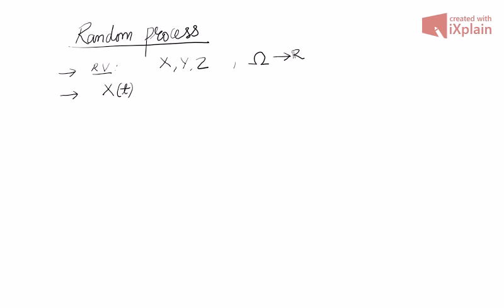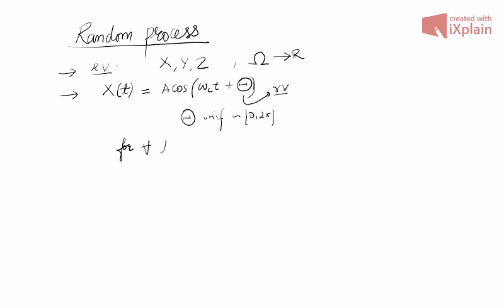An example we discussed previously is X(t) = A·cos(ωct + Θ), where capital Θ is a random variable — a random phase. We assume it is uniformly distributed between 0 and 2π.